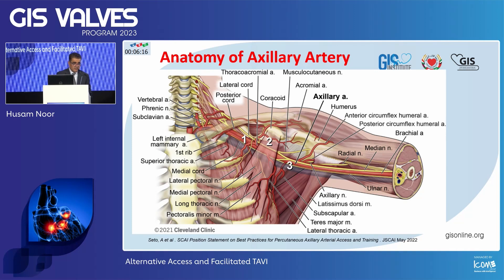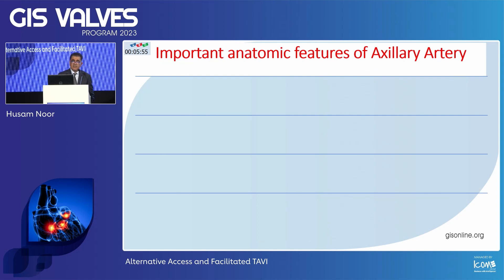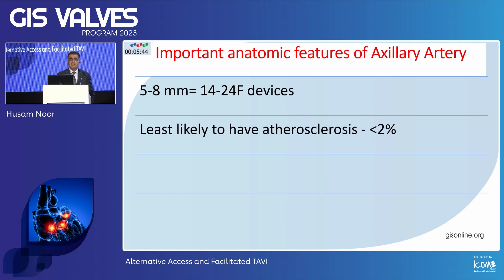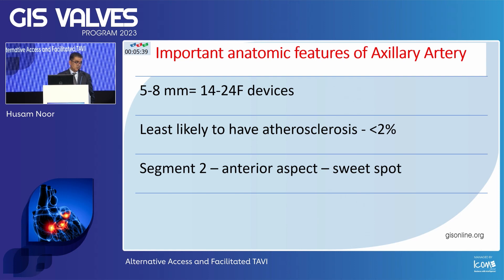Now let's deep dive on the transaxillary access and go quickly through the anatomy. The three segments of the transaxillary access should be recognized, and the area you should be aiming for is segment two. The axillary artery is about five to eight millimeters and can accommodate 12 to 24 French devices. It is least likely to have atherosclerosis. Segment two, the anterior aspect, is your sweet spot.